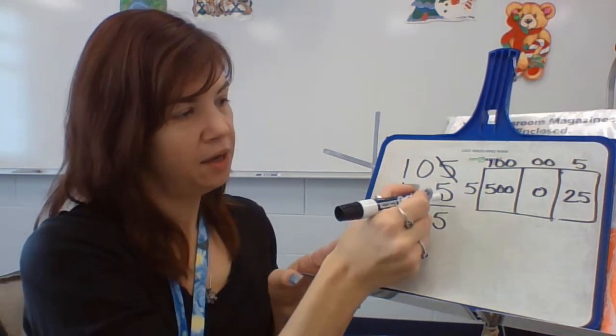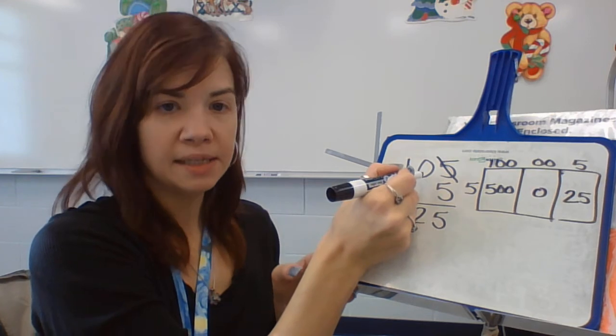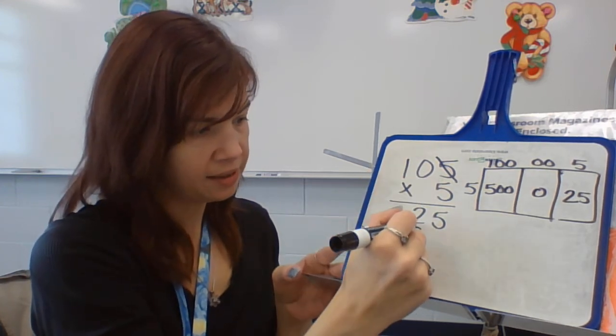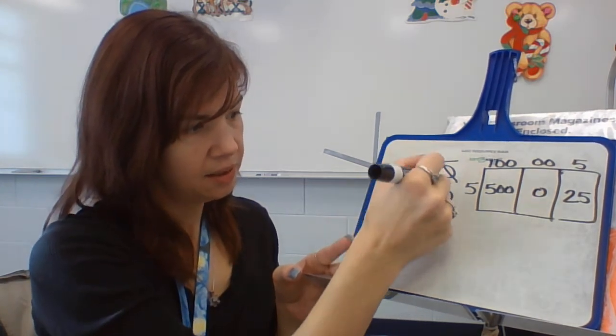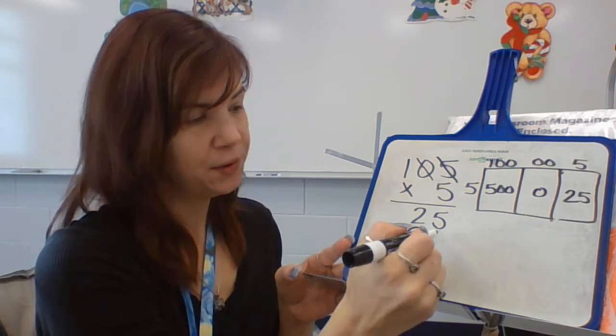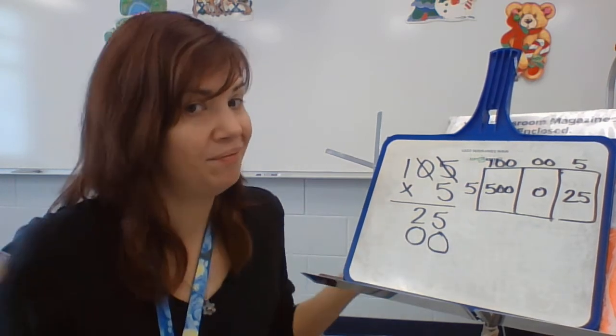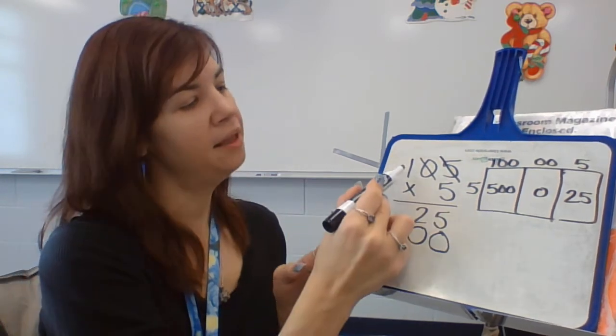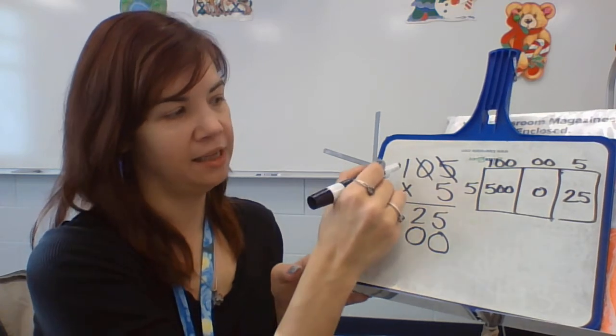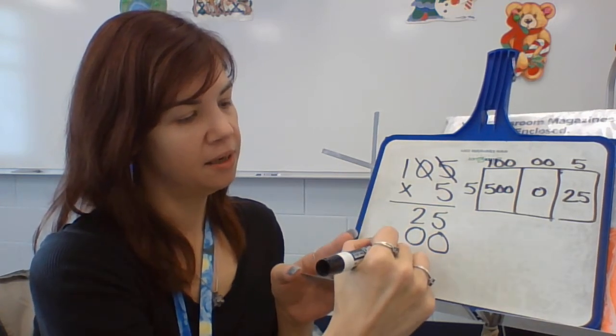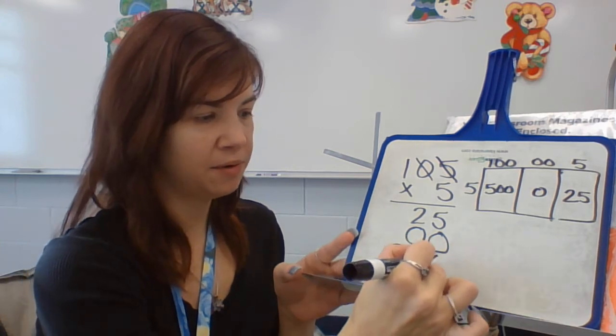And I've used that one. 5 times 0 is zero. And I'm going to put that in the tens place. But I can't have a blank, so that whole line, there's nothing. And the last one, 5 times 1, but in the hundreds place makes it 5, and then we add in our two zeros.